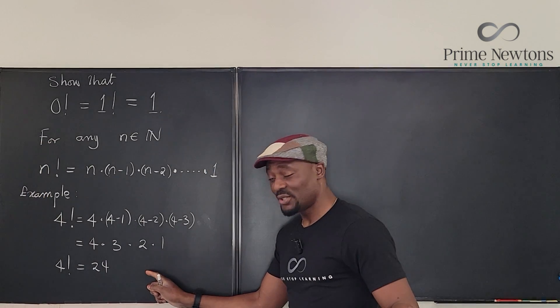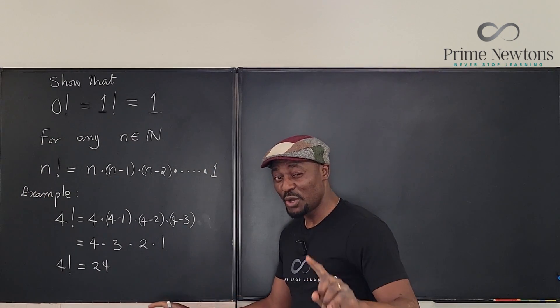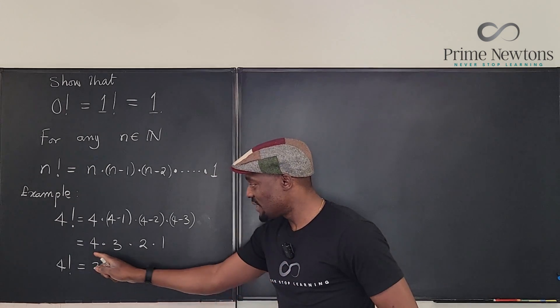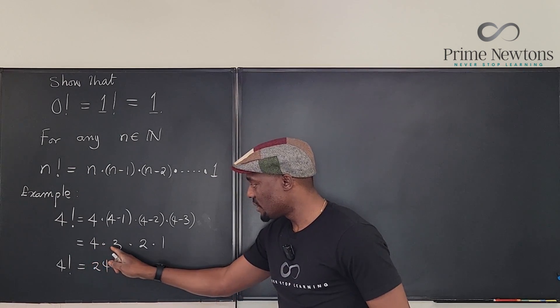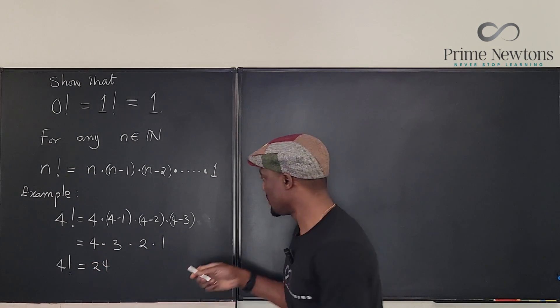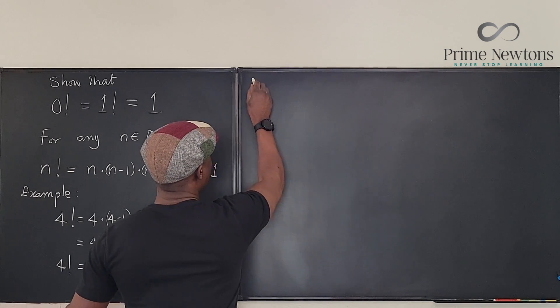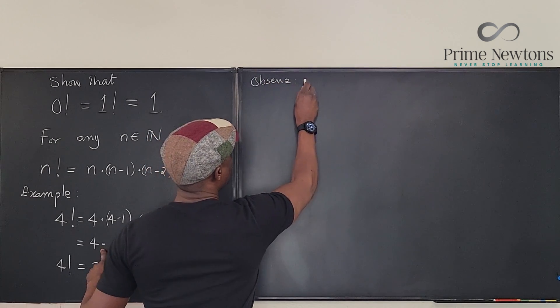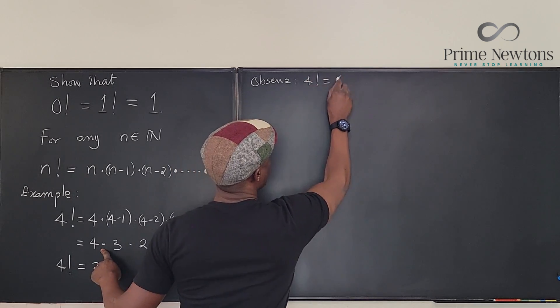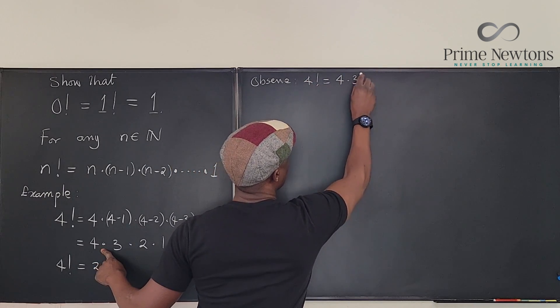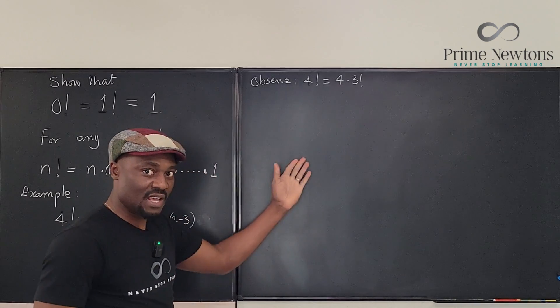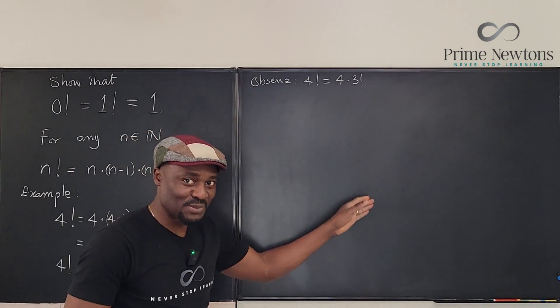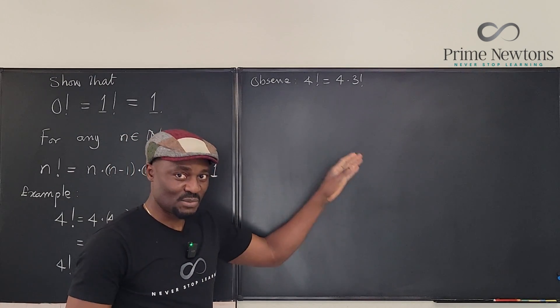Based on this example I just did for 4 factorial, you will observe that I could have written this as 4 times 3 factorial. Observe that 4 factorial is the same thing as 4 times 3 factorial because if you take 3 factorial you just go from 3 times 2 times 1.